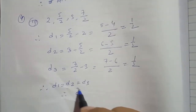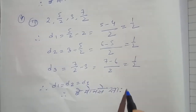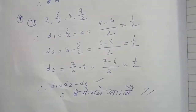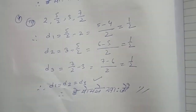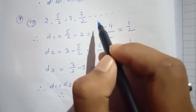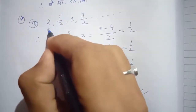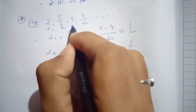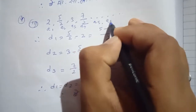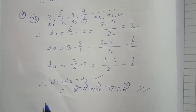Therefore this is an AP. D1 is equal to D3. The common difference is 1 by 2. So the terms are A1, A2, A3, A4, A5, A6, A7.